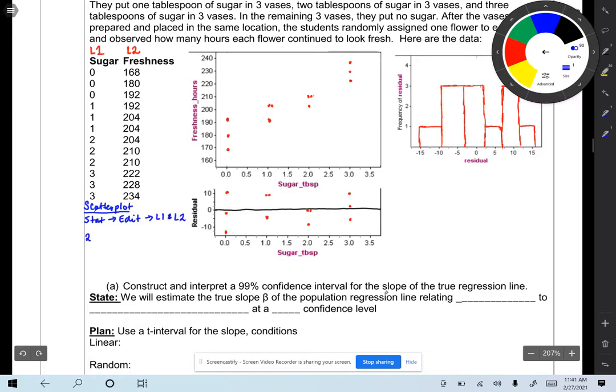And then go to second, y equals, and that'll give you the stat plot. Turn it on. Choose first graph.